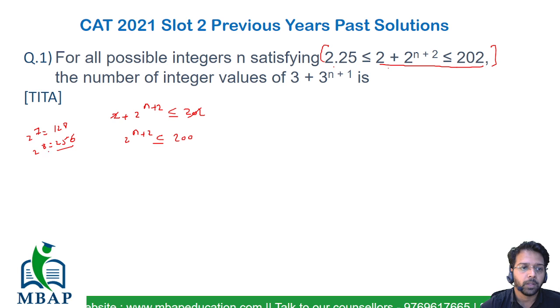Now 2^8 will become 256 which is ideally more than 200. The only value I can take is 2^7 or less than that to make it less than or equal to 200. If n+2 ≤ 7, then the value of n is less than or equal to 5. I can take all integral values which are less than or equal to 5.